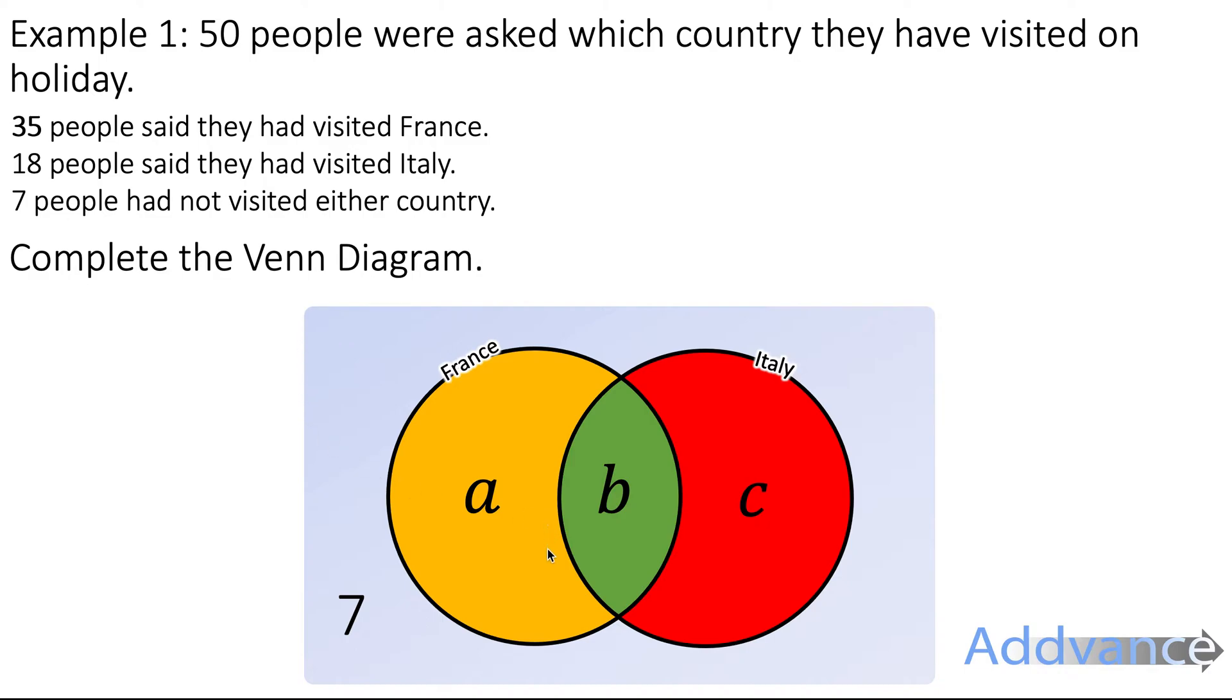We know that A and B are the total number of people who have visited France. So A and B must add up to be 35 plus 35 people have visited France. Similarly 18 people have visited Italy so that's the entire Italy circle B and C must be 18. And then we know that 50 people were asked in total. So if we add all these together we will get 50.